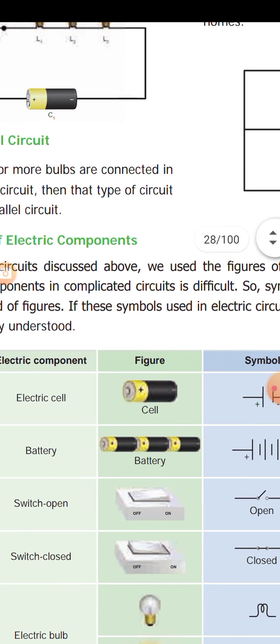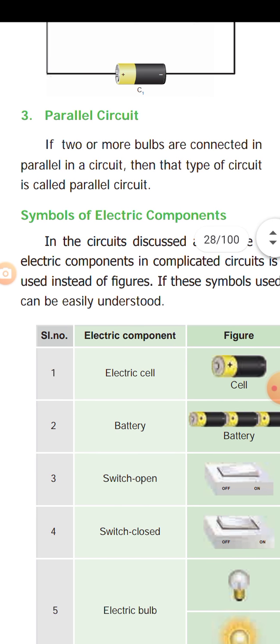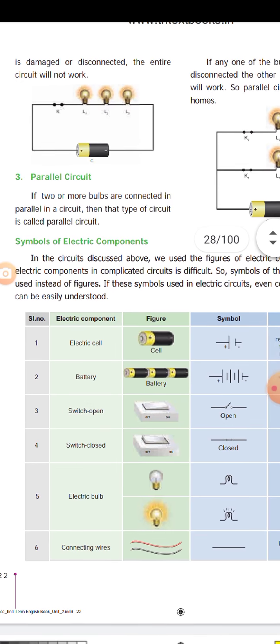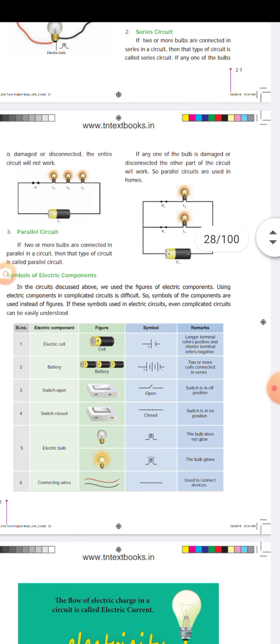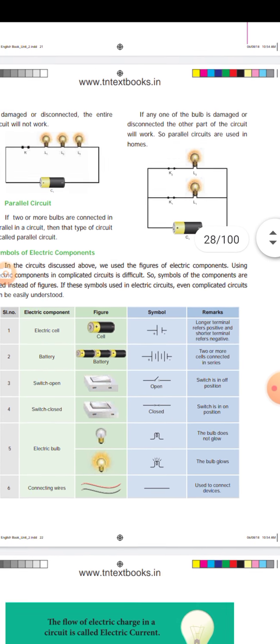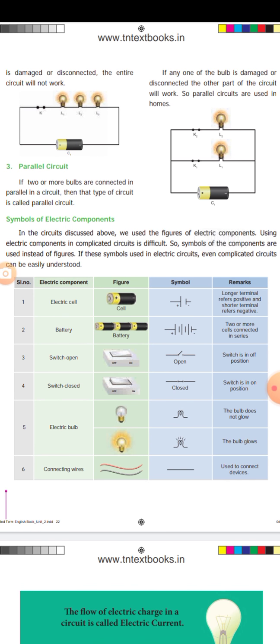Then electric components. Symbol of the electric components. First, the electric component is the electric cell. The symbol consists of a long line and a small line, representing plus and minus. Remark: